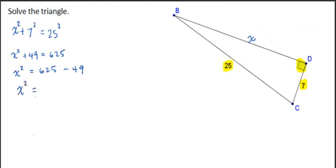So x squared is equal to 576. So x is equal to the square root of 576, which is exactly 24. Okay, so we figured out the side that we were missing.